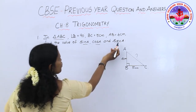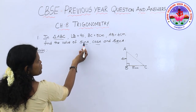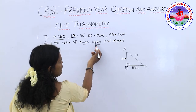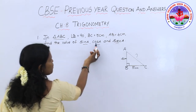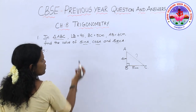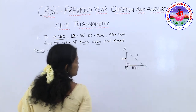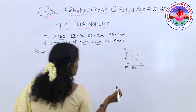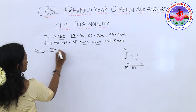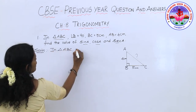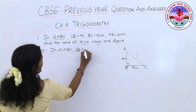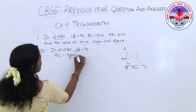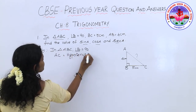We know the trigonometric ratios: sin A is opposite side to angle A by hypotenuse, cos A is adjacent side to angle A by hypotenuse, and secant A is the reciprocal of cos A. For all these ratios we need the hypotenuse, and since it is a right angle triangle, the hypotenuse can be found using the Pythagoras theorem. In triangle ABC, angle B is 90 degrees, so AC is the hypotenuse.